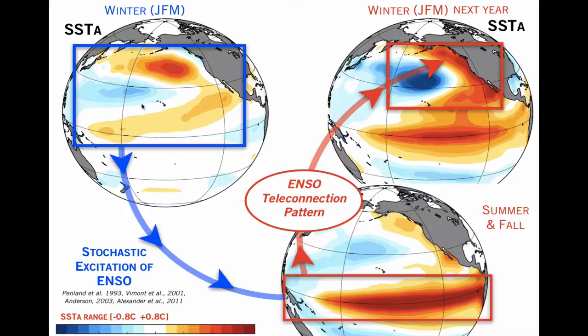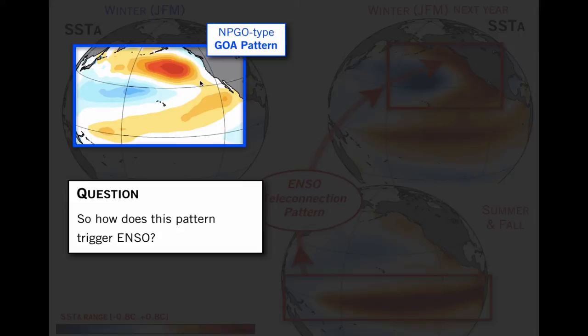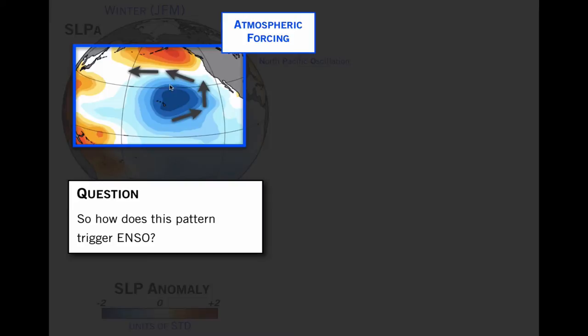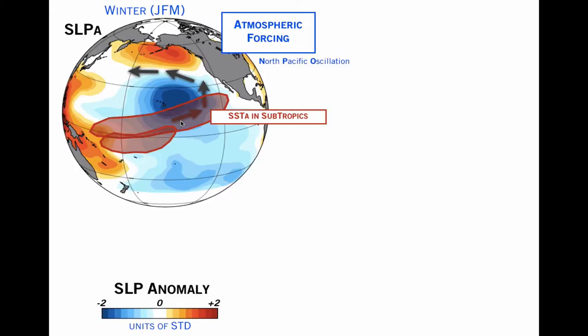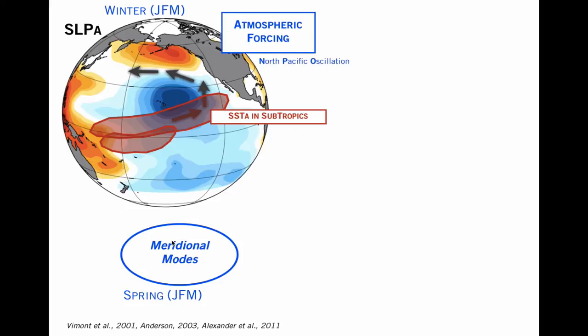How does this pattern trigger El Niño? To understand that, we need to look at the sea level pressure and wind vector anomaly that drive that pattern. This is sea level pressure — we see a dipole, which is a change in the strength of the westerlies. And the wind vector acts as a weakening of the trade winds. If we look more large-scale in the subtropics, where these wind vectors are weakening the trade winds, this weakening essentially reduces evaporation and warms the sea surface temperature. In this region, the ocean and atmosphere are strongly coupled, which ignites a feedback that makes this SST anomaly grow and move toward the equator — well known as the meridional mode dynamic, which typically happens during the spring.